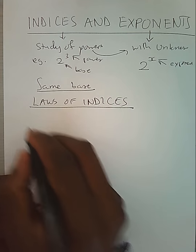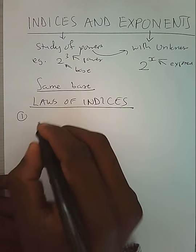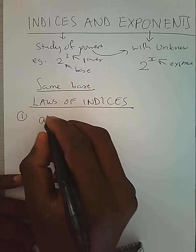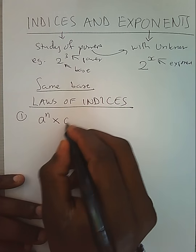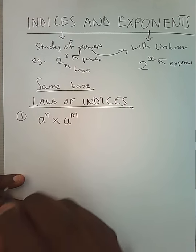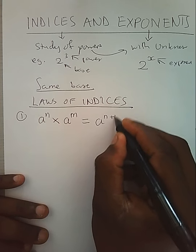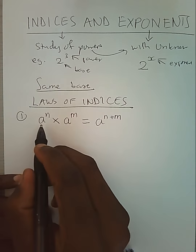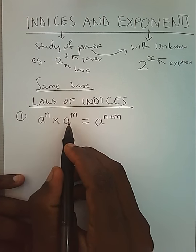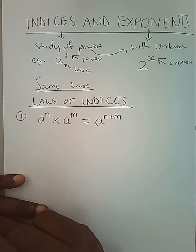The first law states: if we have a number with a power, let's say a power m, multiplying with another number a power m, our outcome will be a power the sum of the powers. When you have the same base under multiplication, we shall just add the powers.